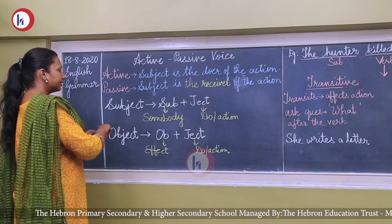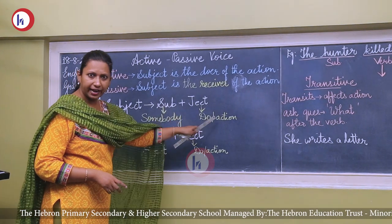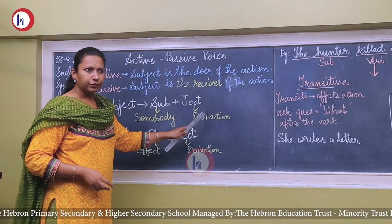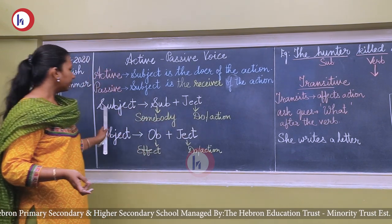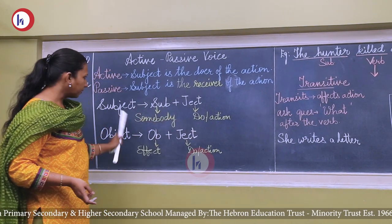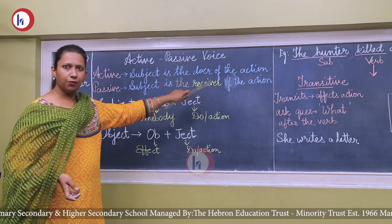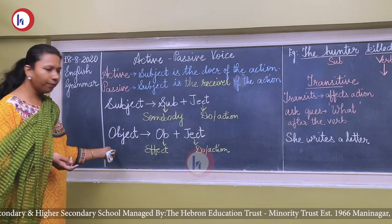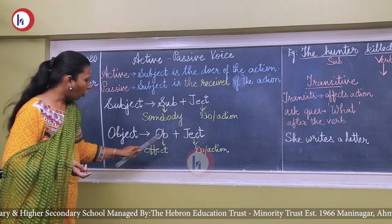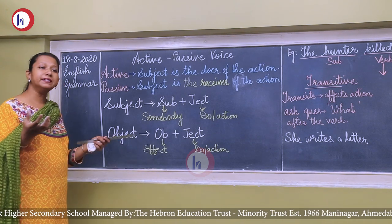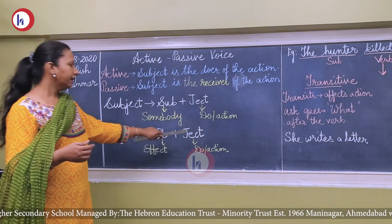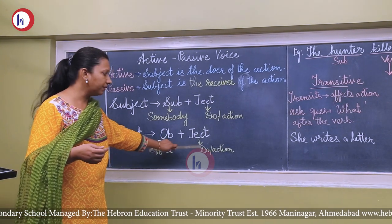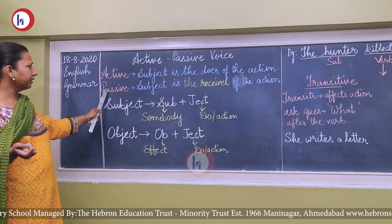The word 'subject' is made up of two parts: sub plus jet. Sub means somebody and jet means do — somebody does the action. The word 'object' is ob plus jet. Ob means effect — the effect or action is received. When an object receives the effect of the action done by the doer, it is called passive voice.